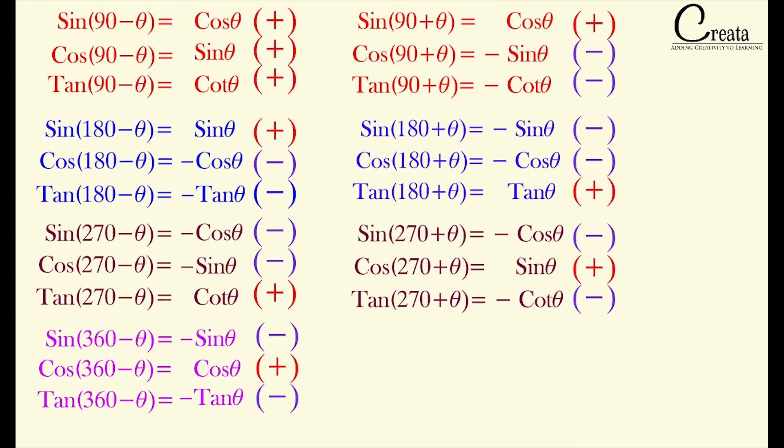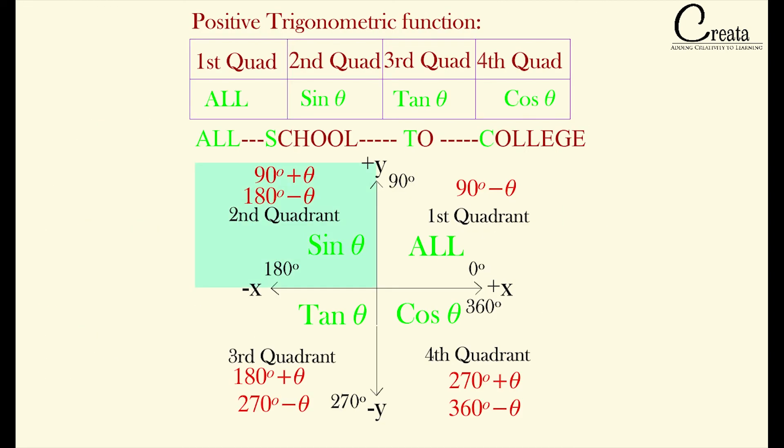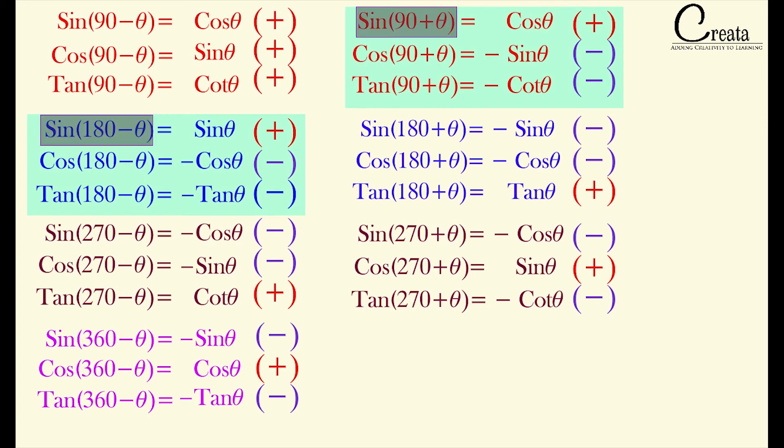So in 90 minus theta case, that is first quadrant, all are positive. In second quadrant, that is 90 plus theta and 180 minus theta, only sin is positive. You have to see on left hand side, that is for the formula which is made, not on right hand side, that is on output side. Do not be confused by any of this. Output will come later. We have to focus here on input only.